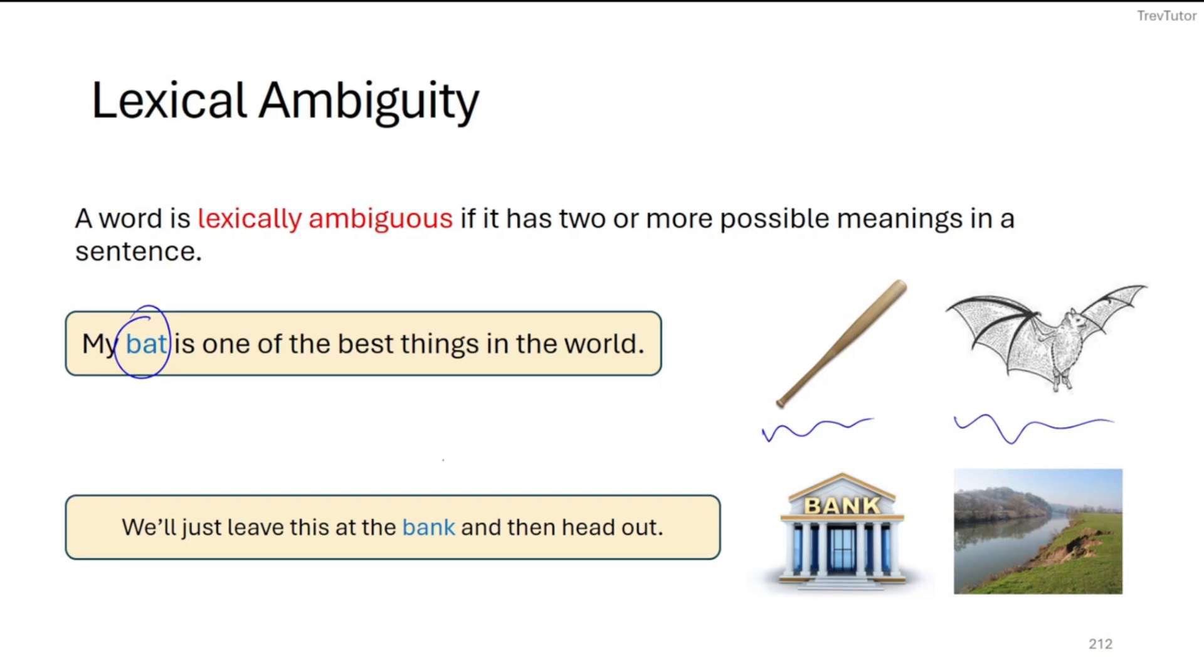We'll just leave this at the bank and then head out. Well, bank could be the place where you deposit money or it could be a river bank. It's going to depend on the context. So until you understand what the context is, it's a lexically ambiguous sentence.